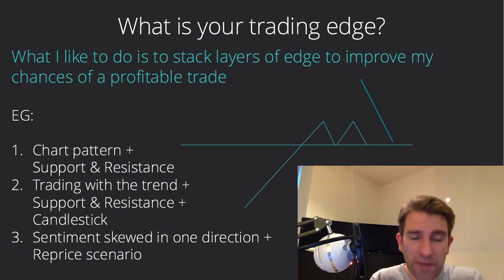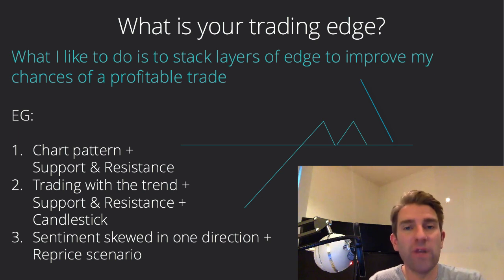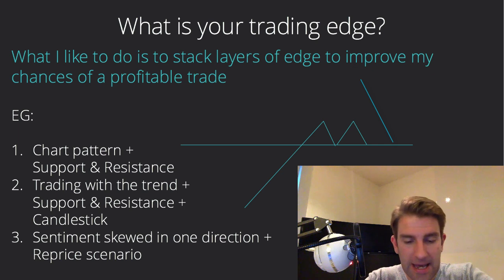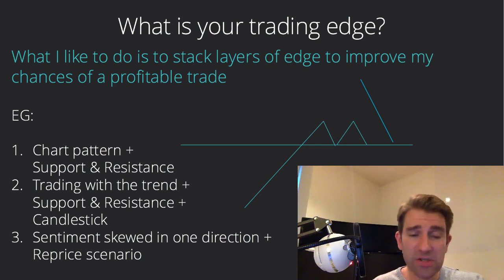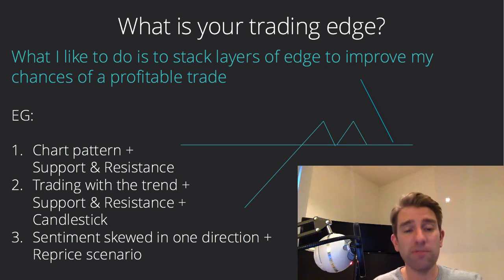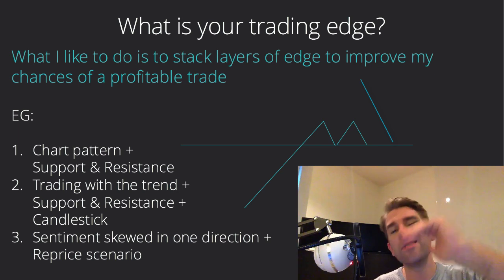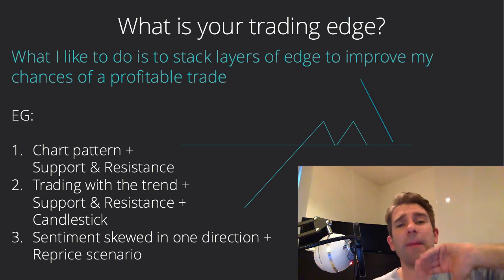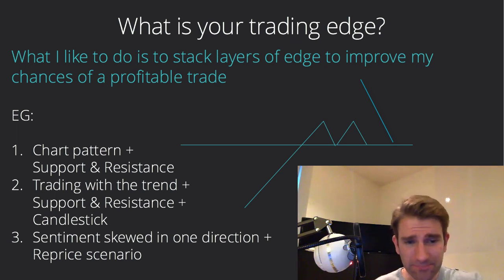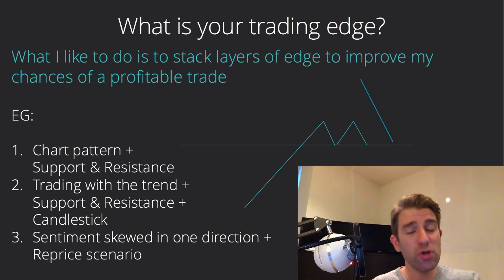Another example — part three — would be where sentiment is skewed in one direction and we have a repricing scenario. A company has been heavily shorted, as we can see from the percentage short float on Finviz for US stocks. It's been going up but stretching the shorts a little bit. Then earnings come out — amazing, better than anyone expected — the stock has gapped up 20% and it's rallying from the open. To me that gives you two layers of edge: one, the price of the stock has been revalued.